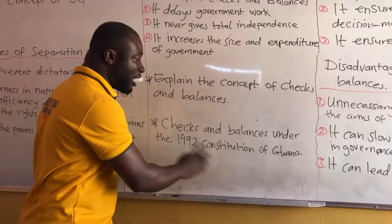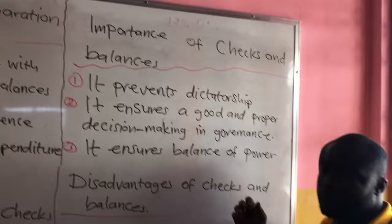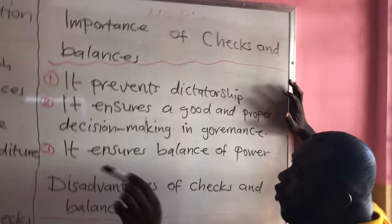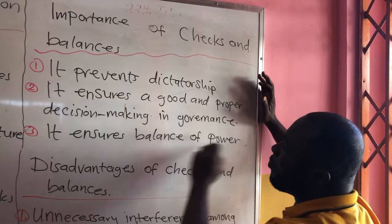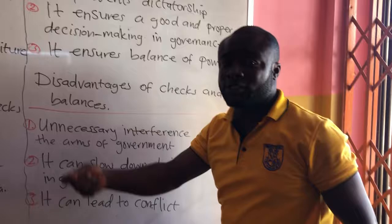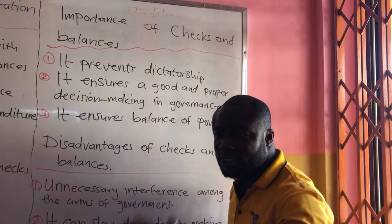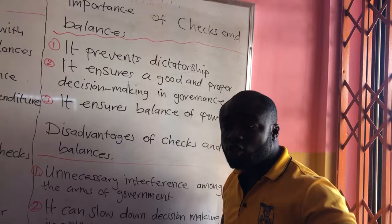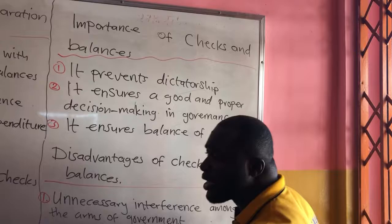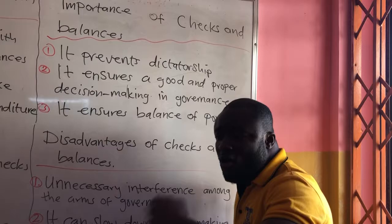Now let's move to the importance of checks and balances. First, it prevents dictatorship — it ensures that no one arm of government becomes more powerful than the other. Second, it ensures good and proper decision making in governance. Before a decision is taken, it goes through a lot of processes. If the executive wants to make a law, it must go to the legislature or parliament, who scrutinize it before approving it. So we end up taking good decisions because no single arm of government sits somewhere and takes the decision alone — it goes through a process.